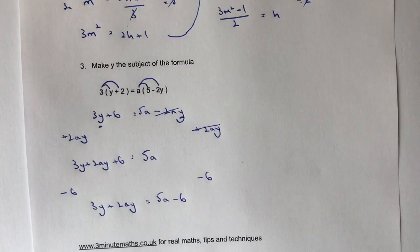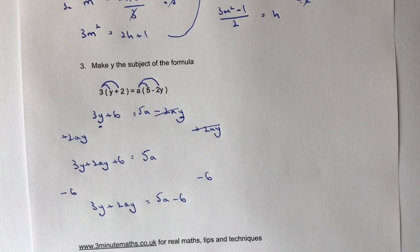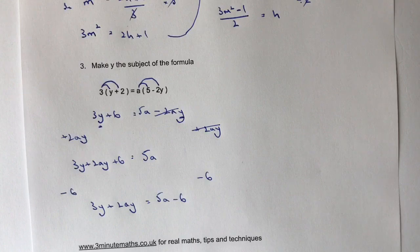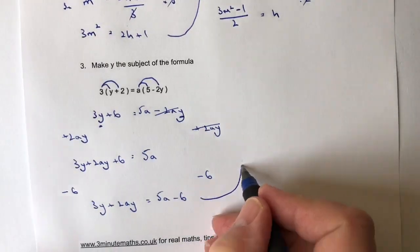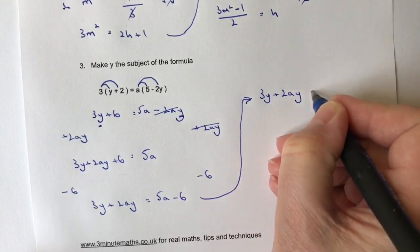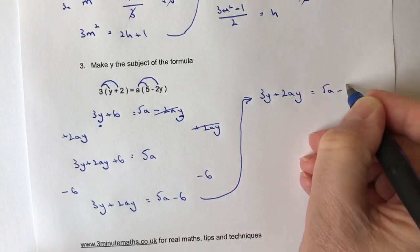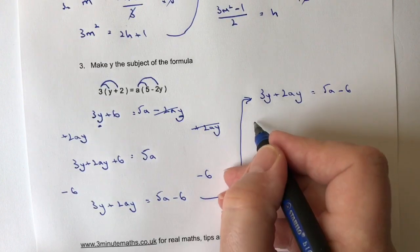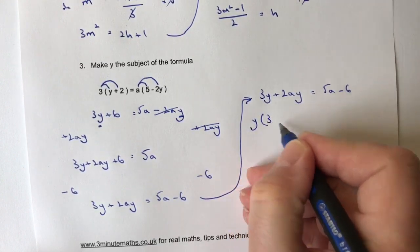Now this is where really we're knocking on the door of a grade 6 type question, maybe possibly even a grade 7, probably closer to grade 6 actually, where what you've got to spot is that while I've got these two terms together, 3Y plus 2AY, and they equal 5A minus 6, I have the ability to factorize for Y.